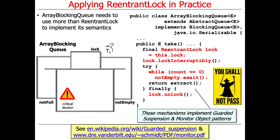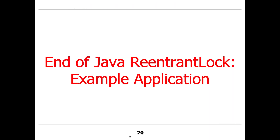This particular implementation implements the guarded suspension pattern, and the whole thing — plus the other methods like the put method — implements the so-called monitor object pattern, a classic POSA 2 pattern from a book I wrote years ago. That's the end of the overview of this example, which focused on the ReentrantLock protocol. We will talk about the condition object protocol next.